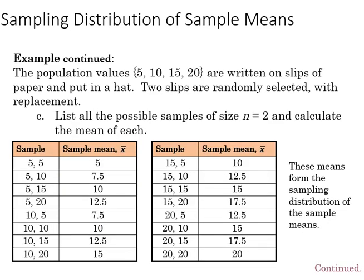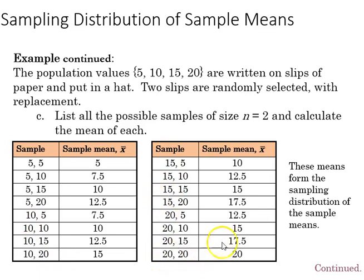Continuing the example, if we draw two slips of paper at a time, we can list out all possible combinations of two. We see drawing the 5 twice, drawing the 5 and the 10, the 5 and the 15, and the 5 and the 20. Then the combinations starting with 10, followed by 5, 10, 15, and 20, and so on for the 15s and 20s. The sample mean for each of those combinations is shown as the average of the two.